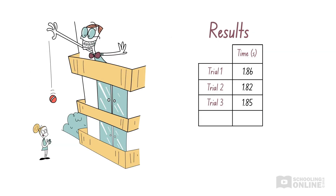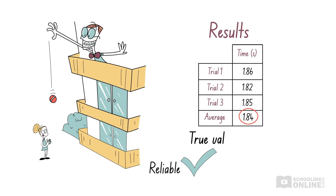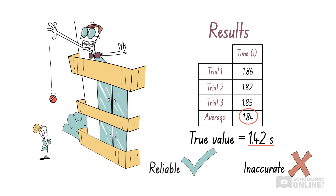What does precision look like in science? Let's go back to the experiment where we try to find how long it takes for a cricket ball to fall three storeys. All the experimental results are close to each other — they only differ by 40 milliseconds. If we calculate the average time, we find that all our results are close to this average. This means our results are precise and our method is reliable. Then the teacher informs us that the true value for the time it takes to fall three storeys is 1.42 seconds. Unfortunately, our results are not accurate because they are higher than the true value. As you can see, we have inaccurate results that are reliable and precise.